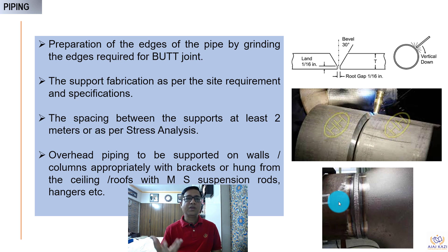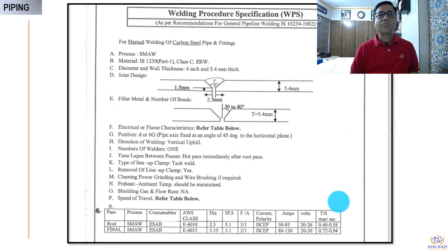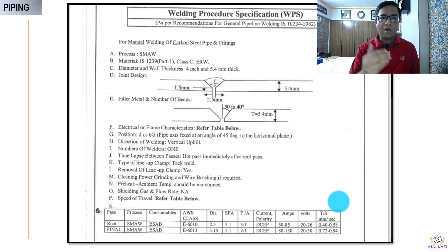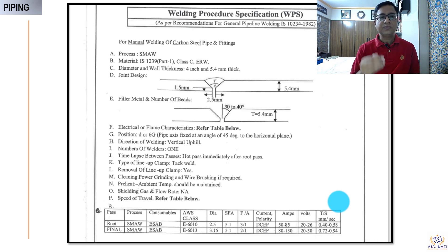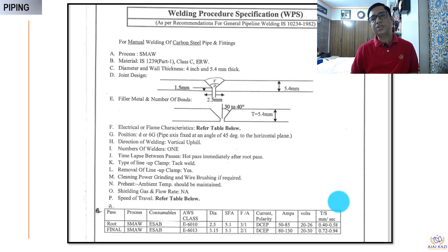Support fabrication will have specifications governing it, or we can do a stress analysis to know the exact stress and determine the right support size. Generally pipes are hung from the ceiling, columns, or floors depending on the situation. This is the welding procedure — WPS per IS 10234 — which specifies how the welding process is to be done and whether the welders are qualified. Key parameters include vertical or wheel direction of welding, time between passes, removal of line-up, and cleaning by power grinding or wire brush.